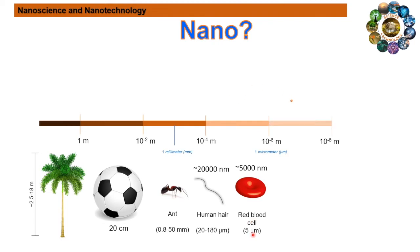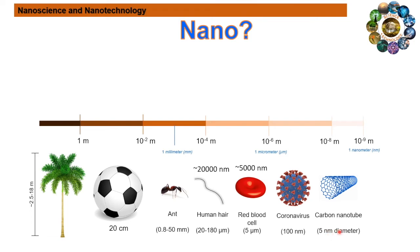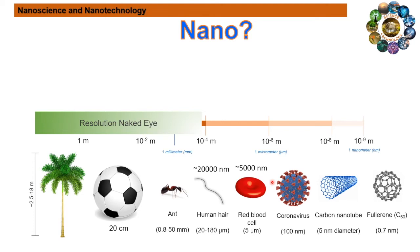Further reducing to the nanometer scale, objects become very small and cannot be seen by our naked eye. For example, the typical size of a coronavirus is about 100 nanometers. A carbon nanotube has a diameter of about 5 nanometers — these are the types of nanomaterials used to build nanotechnology. Beyond the nanometer scale we enter the atomic scale range; for example, fullerene has a size of about 0.7 nanometers, where you can see how atoms are bonded together. Our naked eye has a resolution to see objects of only about 100 micrometers.